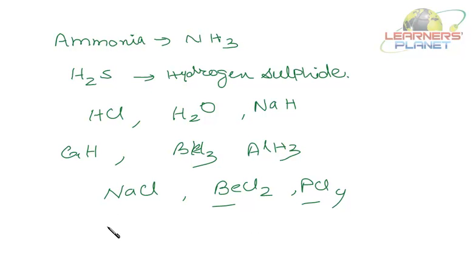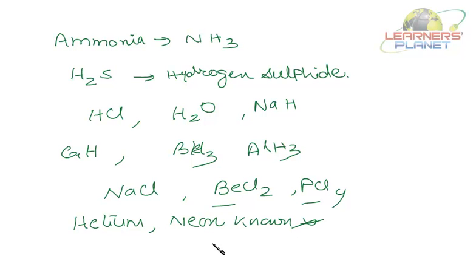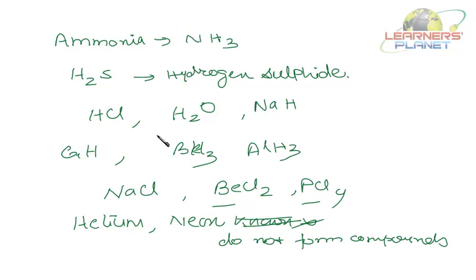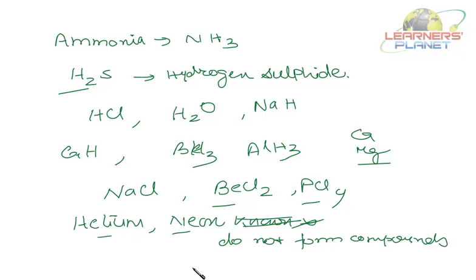Now, there is no compound of helium known, and no compound of neon known — they do not form compounds. Whereas elements like hydrogen, sulfur, chlorine, boron, beryllium, lithium, sodium, potassium, and magnesium all form compounds. Why is it that helium and neon do not form bonds while other elements do? Let's study why atoms combine to form molecules.